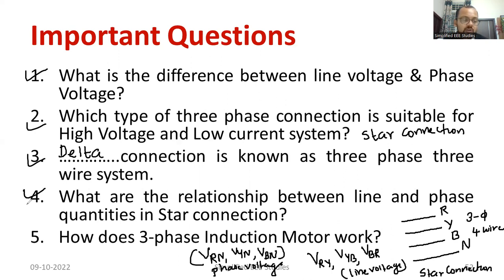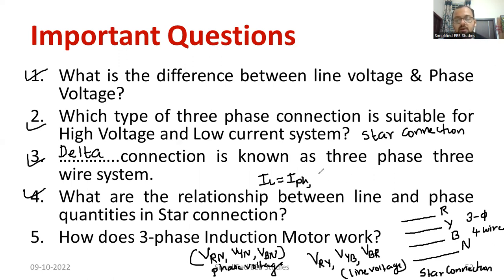Question number four: What are the relationships between line and phase quantities in star connection? In case of star connection, the line current is always equal to phase current. Similarly, the line voltage equals root three times the phase voltage. This is the condition for star connection.